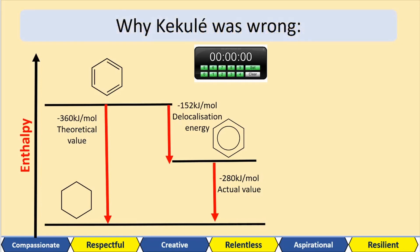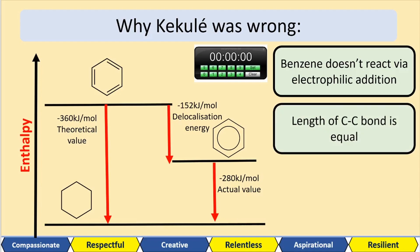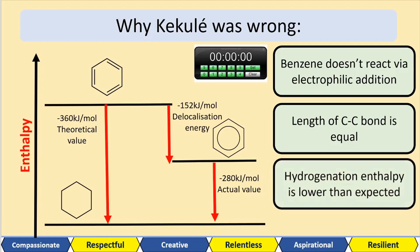Let's summarize the issues with the Kekulé model. First, benzene does not react via electrophilic addition — so it doesn't undergo the mechanism that would decolorize bromine water. Second, the lengths of the carbon-carbon bonds are equal — X-ray diffraction showed that the bond lengths between each carbon in benzene are all the same, with only one type of bond, not alternating double and single bonds. And finally, the hydrogenation enthalpy is lower than expected — we expected minus 360 kilojoules per mole, but it's actually minus 280 kilojoules per mole.